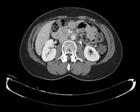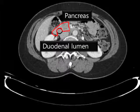Her CECT abdomen showed that the pancreas was partially encircling the duodenal lumen.